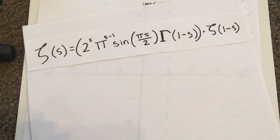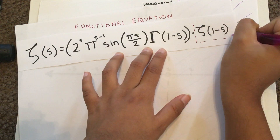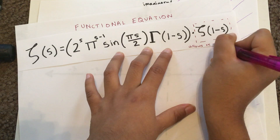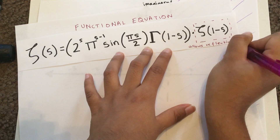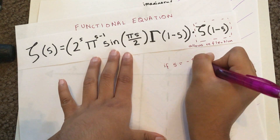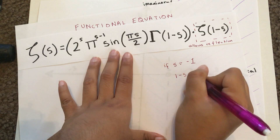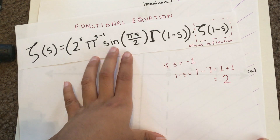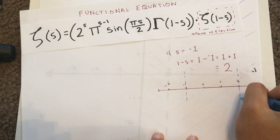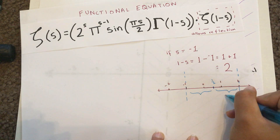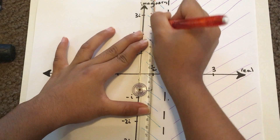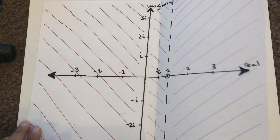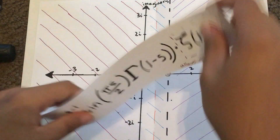This last equation is known as the functional equation. The main thing to notice is this part, which allows us to reflect values of numbers we already know into the realm of negative numbers. If s is negative 1, then 1 minus s will be 2, and we already know what zeta of 2 is. Notice that negative 1 and 2 are both exactly 1 and a half away from the number one half — this is the reflection. Essentially, we have folded our plane over the line at one half and expanded our domain into negative numbers.